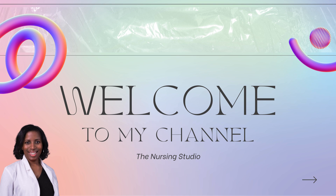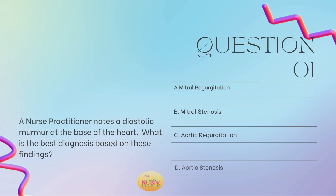Let's get into question number one for today. Question number one states: a nurse practitioner notes a diastolic murmur at the base of the heart. What is the best diagnosis based on these findings? Is it A, mitral regurgitation; B, mitral stenosis; C, aortic regurgitation; or D, aortic stenosis? Take a moment and tell me what you got in the comments.